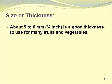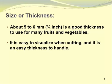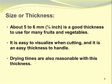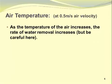About 5 to 6 mm, or a quarter of an inch, is really a good thickness to use for many fruits and vegetables. It's easy to visualize when cutting, easy to handle, and drying times are also reasonable with this thickness. Now let's take a look at another important variable: air temperature.